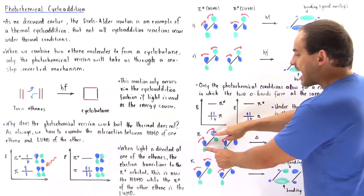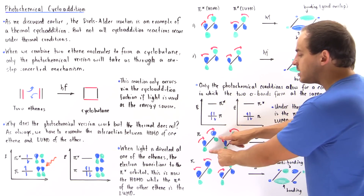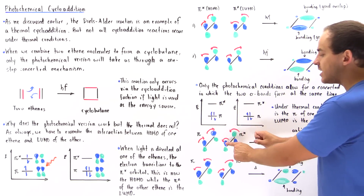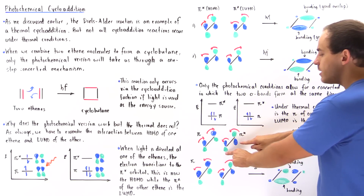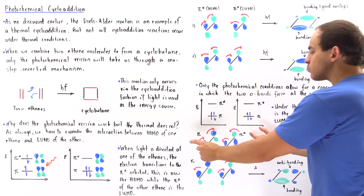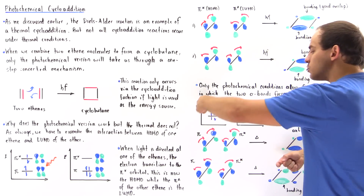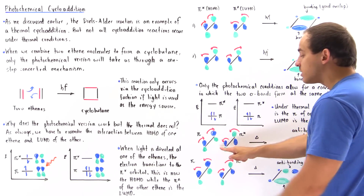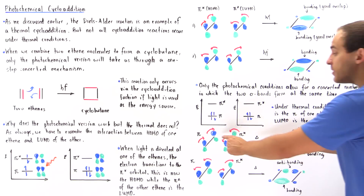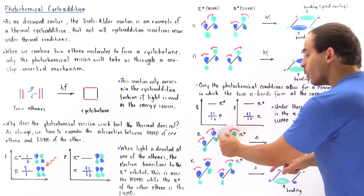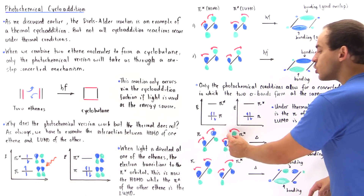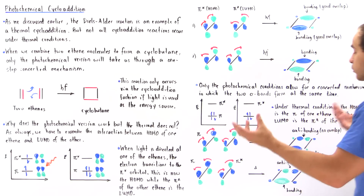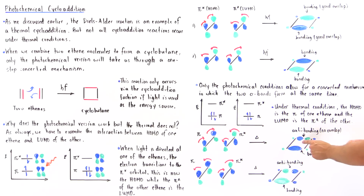Now we have the blue lobes on top and green lobes on the bottom for the HOMO, while the LUMO still has alternating blue-green coloring. If they rotate inward, this section will have a good blue-blue overlap, but the other section will have a blue lobe next to a green lobe — a negative next to a positive sign — and these wave functions will cancel out, giving an anti-bonding interaction with no good overlap.